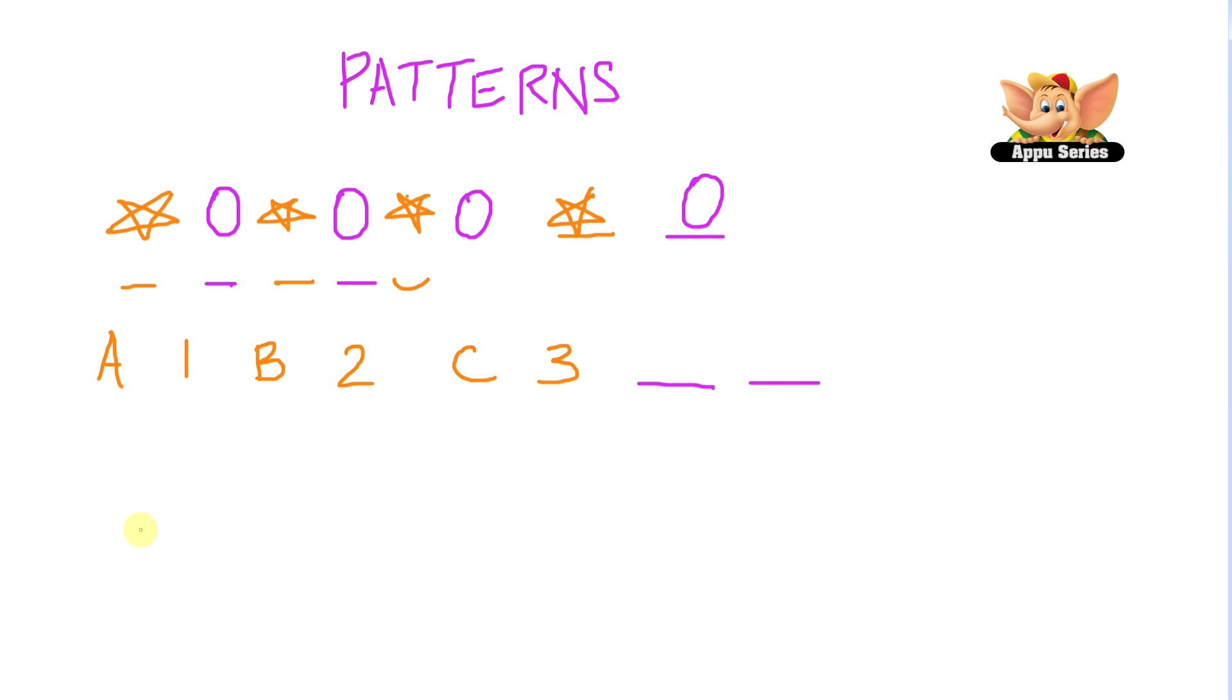We have the first alphabet, A, and the first number, 1, followed by the second alphabet, B, and the second number, 2.